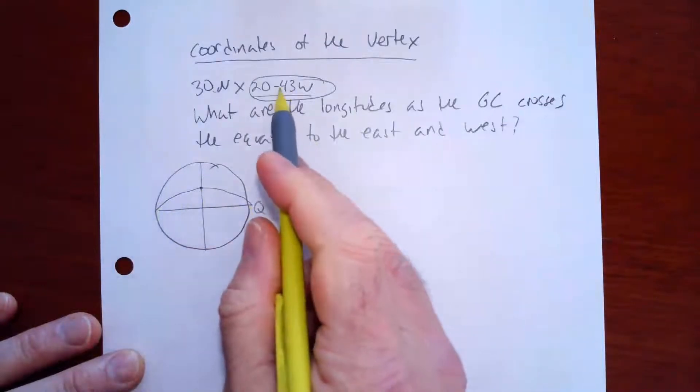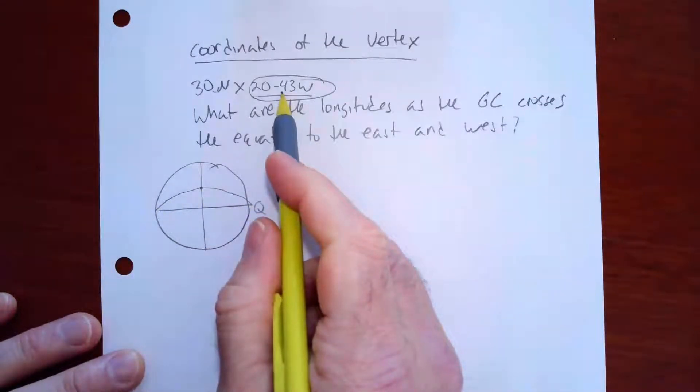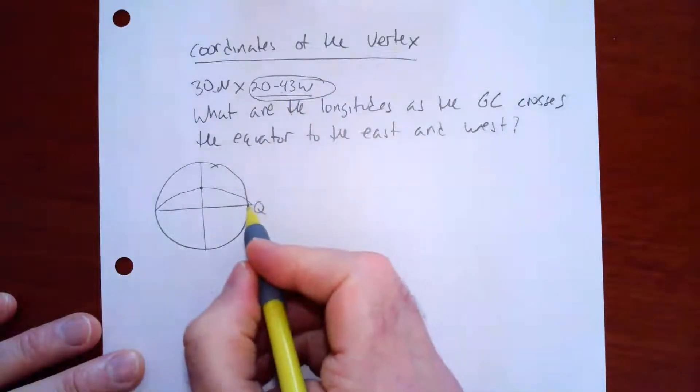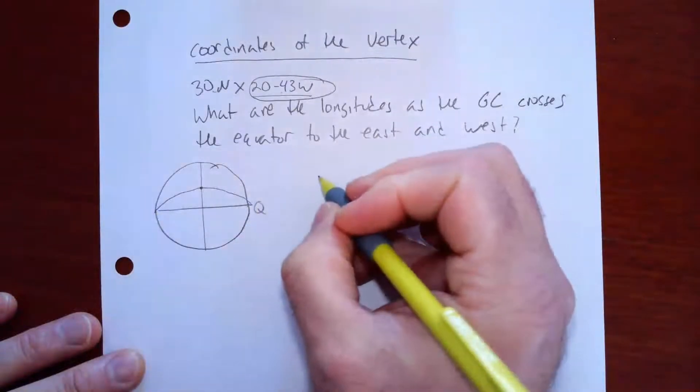So what I need to do now is I need to add 90 to 20 43 west, and I need to subtract 90 from 20 43 west, and those would be the longitudes at these two places here. So here we go.